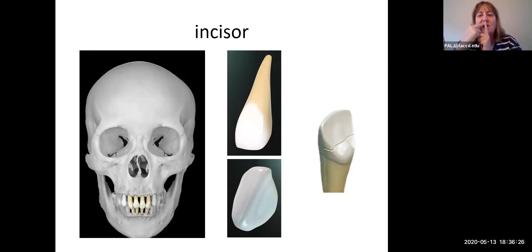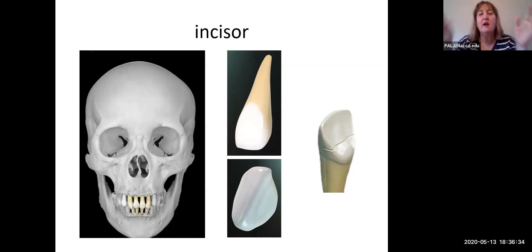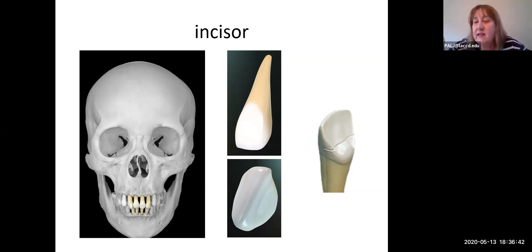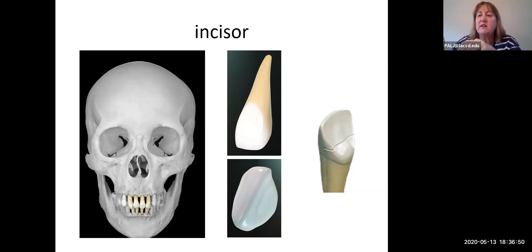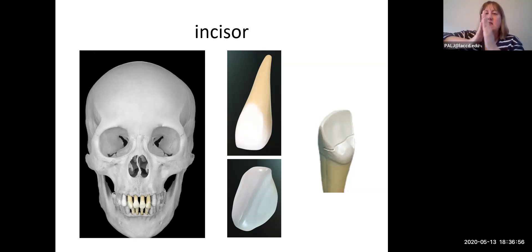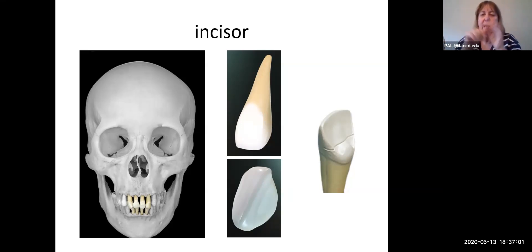The first teeth from the midline — the first two in each quadrant — are called incisors. Your textbook talks about central incisor and lateral incisor, but we're just going to call them both incisor. When you look at an incisor it has one root that narrows down, kind of like an upside-down ice cream cone. The white exposed part is straight in the front, scalloped in the back, and very thin at the top — like a knife edge for cutting.